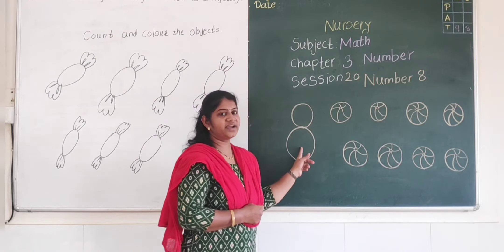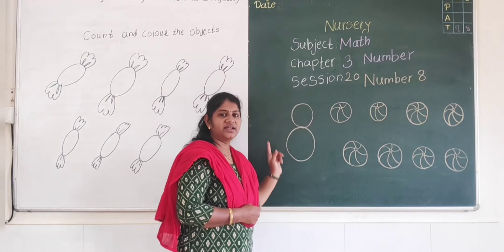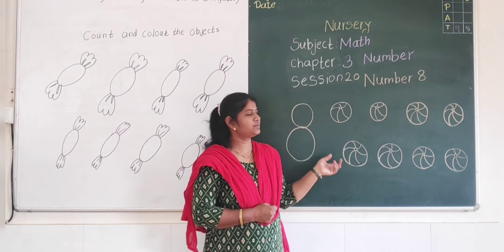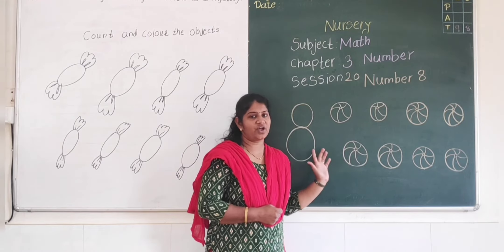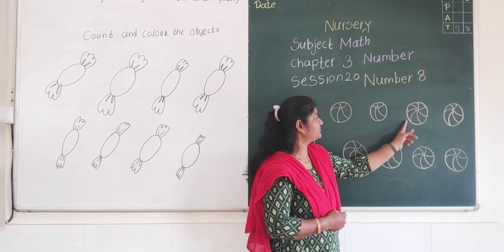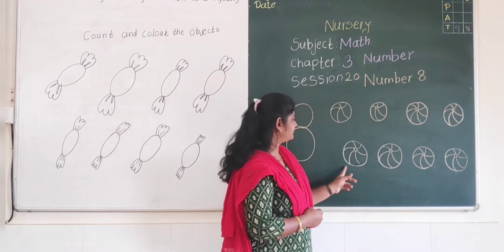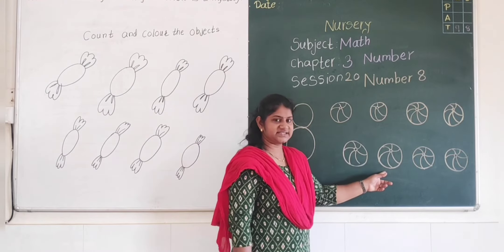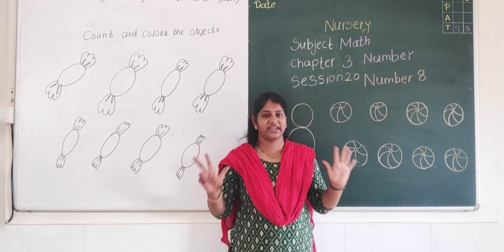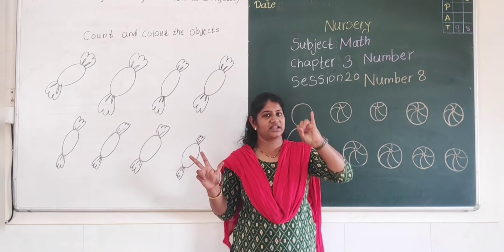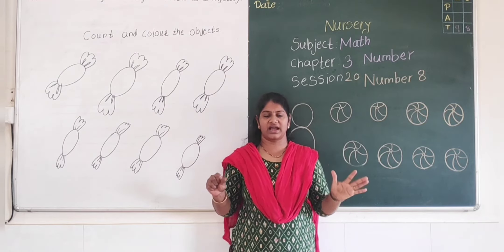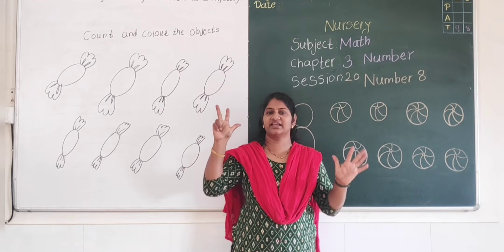This is number 8. These are balls. Let's count. How many balls have I drawn on this cardboard? 1, 2, 3, 4, 5, 6, 7, 8. How many balls are here? 8 balls. 1, 2, 3, 4, 5, 6, 7, 8.